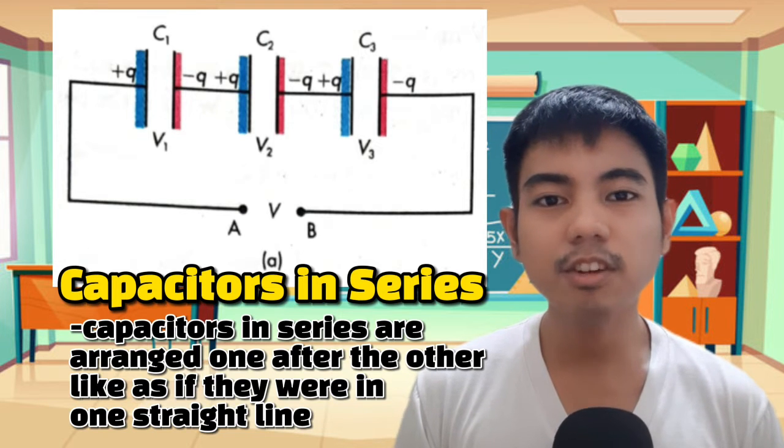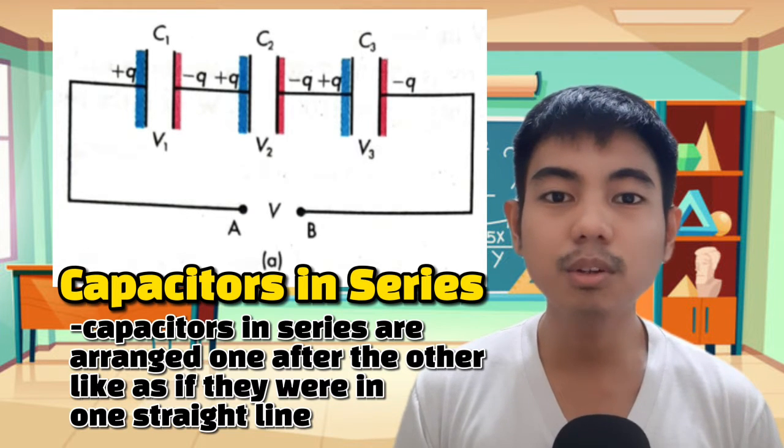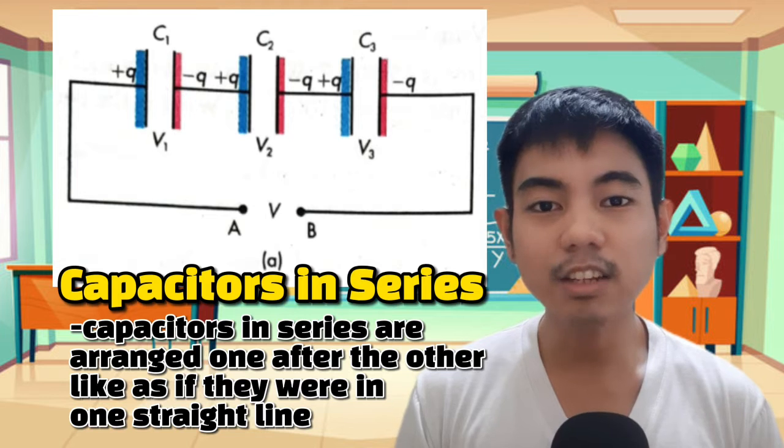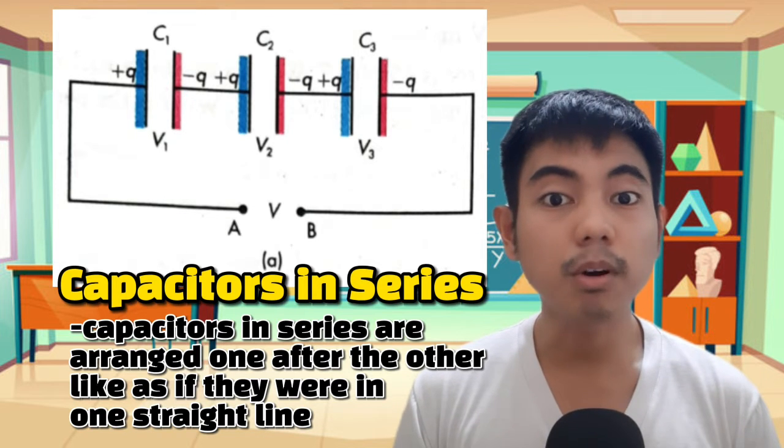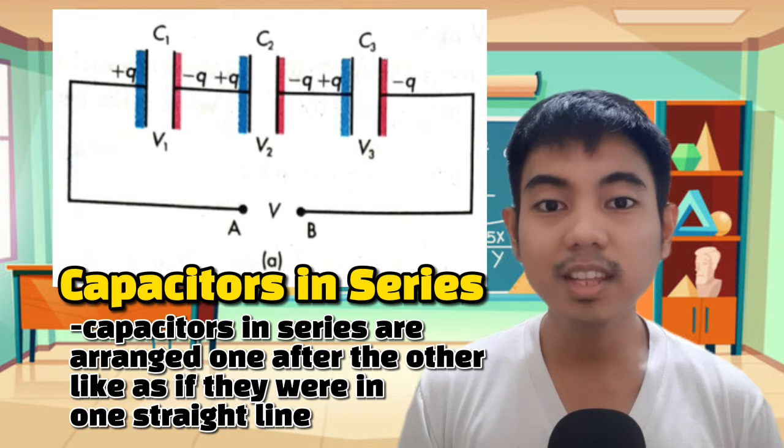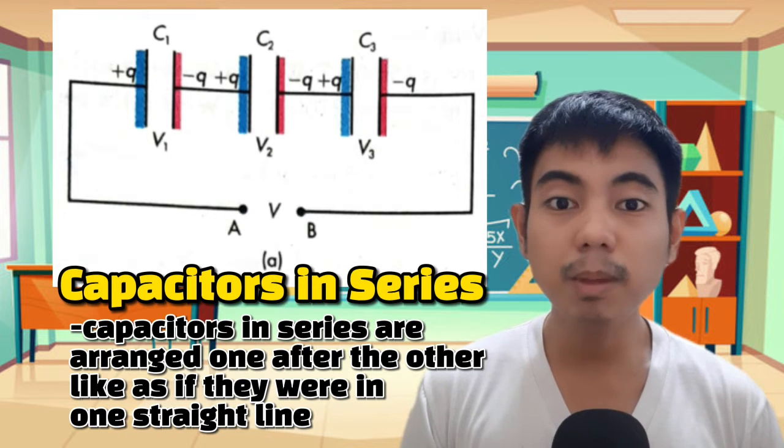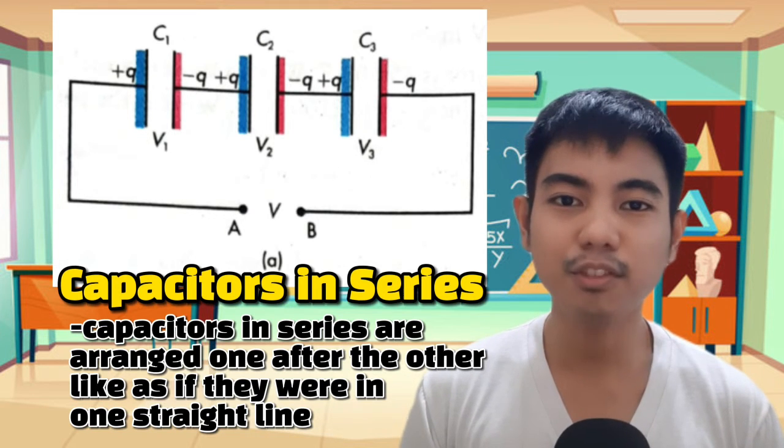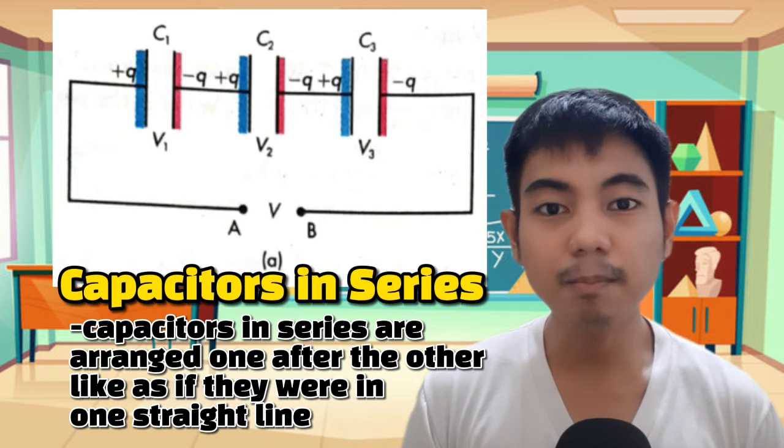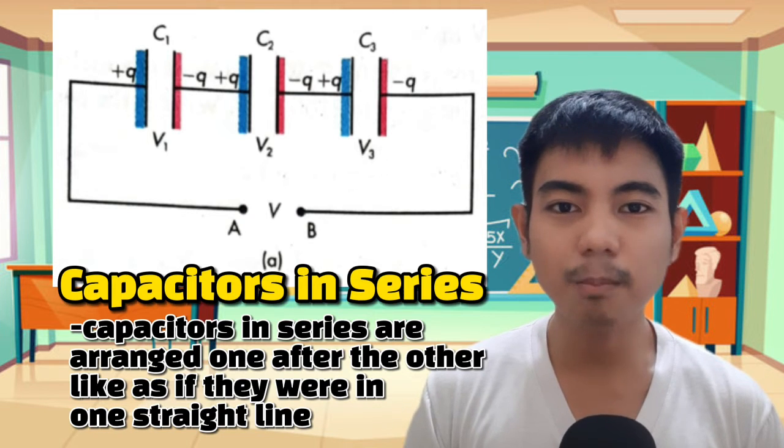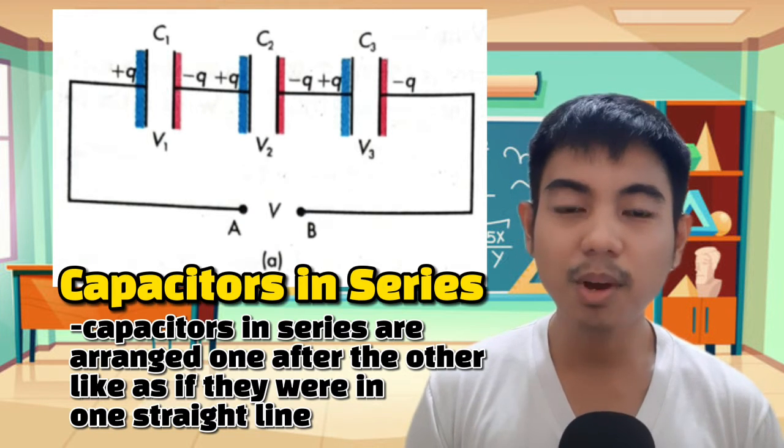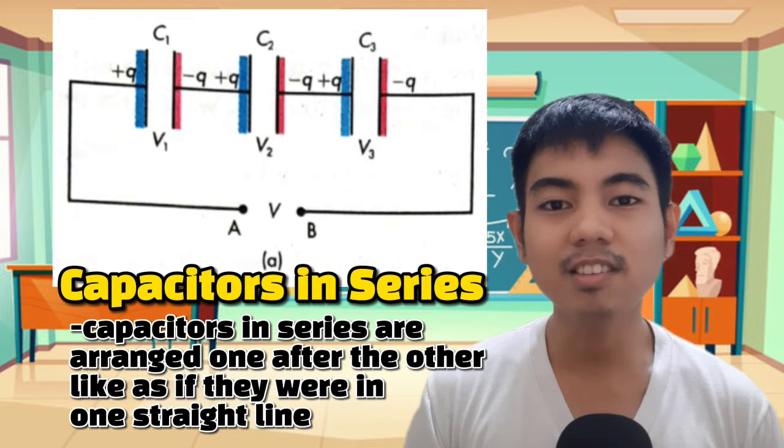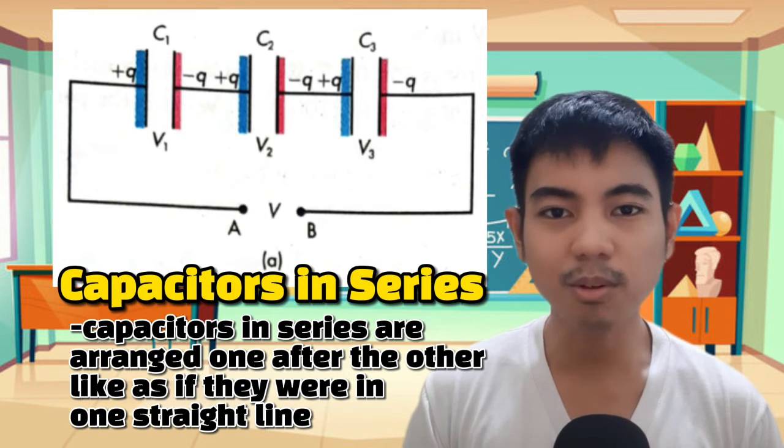The series combination may be likened or analogous to people standing in a straight line. When you see people standing in a straight line, you notice that the arrangement of people is one after the other. This is the same thing as in series combinations. Let's learn more about the characteristics of series combinations of capacitors.